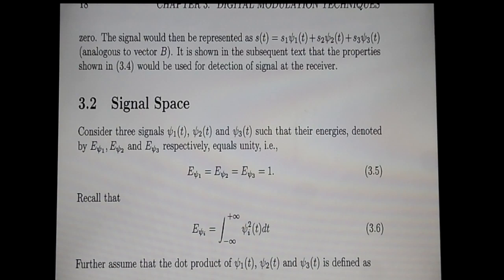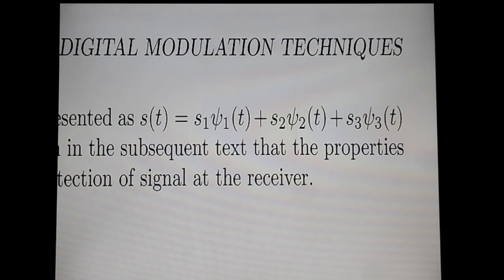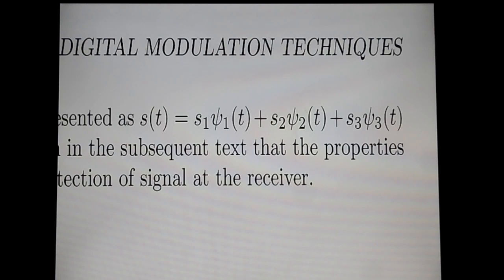If we already have three orthogonal signals ψ₁(t), ψ₂(t), ψ₃(t) — analogous to i, j, k — then we can write any signal s(t) as a linear combination of these three: s(t) = s₁·ψ₁(t) + s₂·ψ₂(t) + s₃·ψ₃(t). This is the linear combination of orthogonal signals.